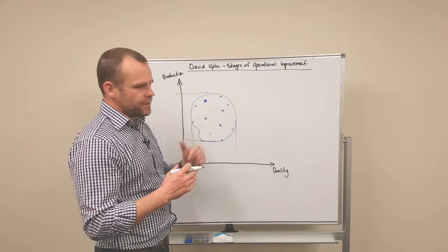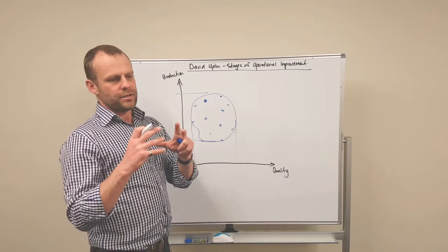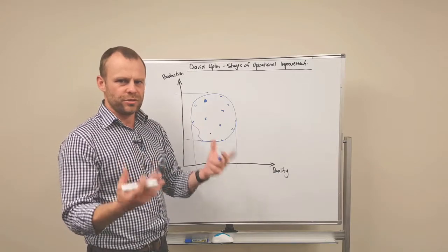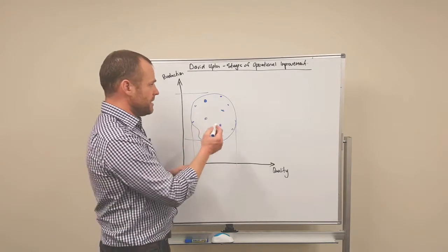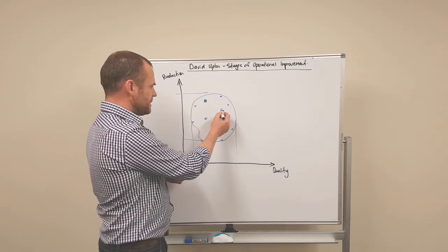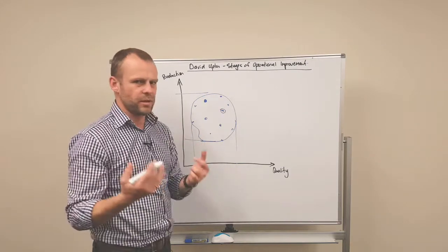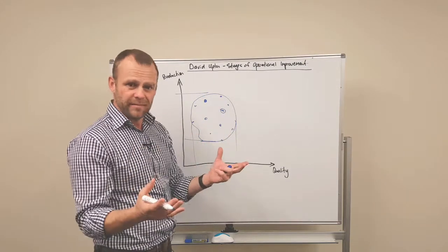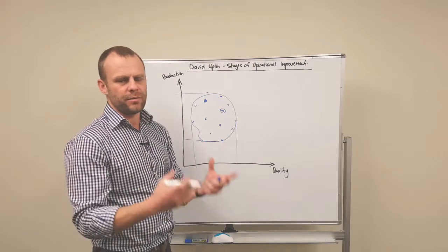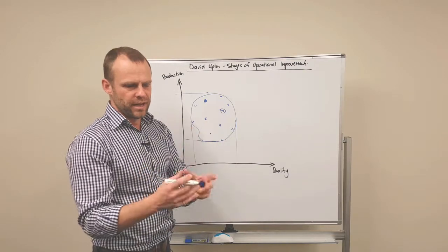So what David Upton said is that to deal with this, the first thing you should do, because there's a lot of loss in this, is just to choose one of these places. It doesn't matter whether it's the fastest, the best quality, whatever, just choose one and start to manage the operation effectively to that.